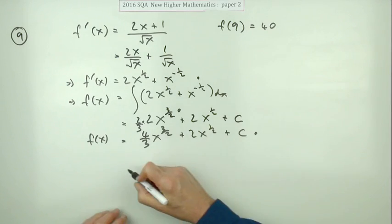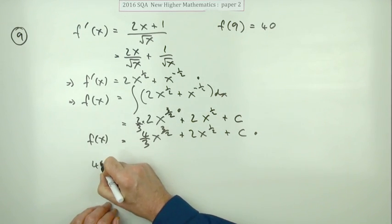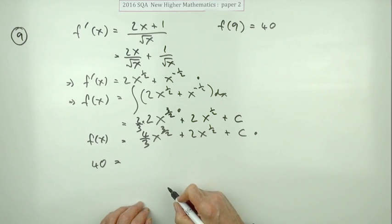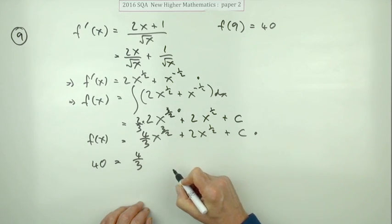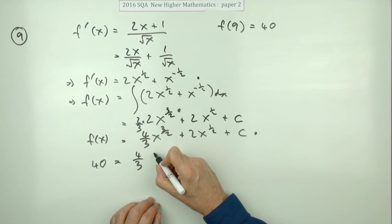Now you've got if you put in nine, the answer is 40. That will come to 40 when x is nine. So that's four upon three times nine to the power three upon two, which you could just write that way.